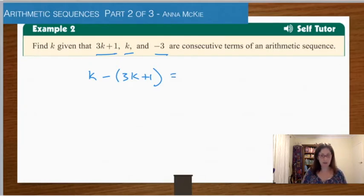That will be equal to the difference of the next two terms, so we have negative 3 here, subtract off k. So let's see how we would solve that.